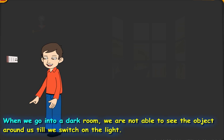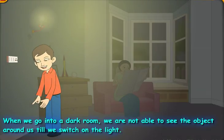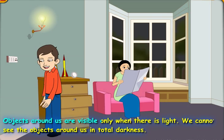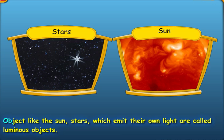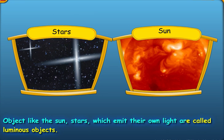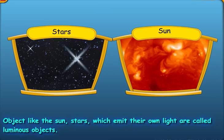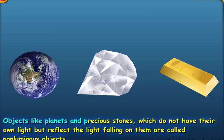When we go into a dark room, we are not able to see the objects around us till we switch on the light. Objects around us are visible only when there is light. We cannot see objects around us in total darkness. Objects like the sun and stars which emit their own light are called luminous objects. Objects like planets and precious stones which do not have their own light but reflect the light falling on them are called non-luminous objects.